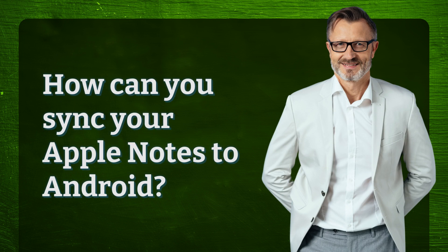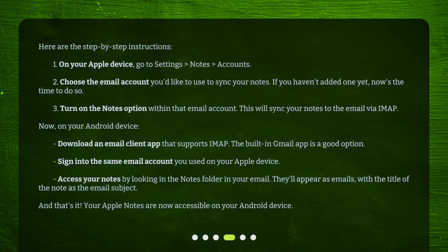How can you sync your Apple Notes to Android? Here are the step-by-step instructions. First, on your Apple device, go to Settings > Notes > Accounts. Second, choose the email account you'd like to use to sync your notes. If you haven't added one yet, now's the time to do so. Third, turn on the Notes option within that email account. This will sync your notes to the email via IMAP.